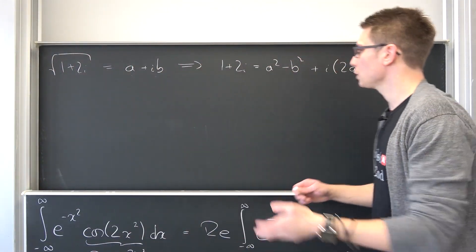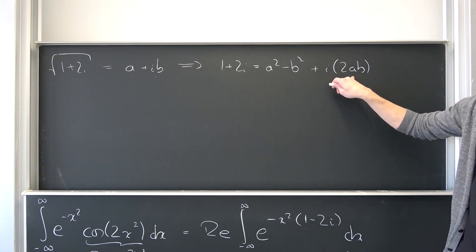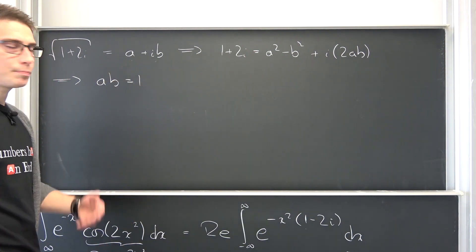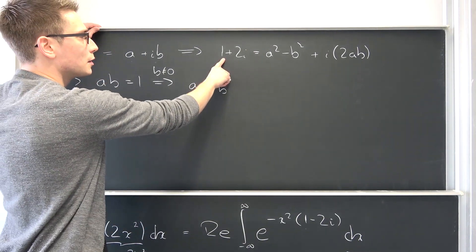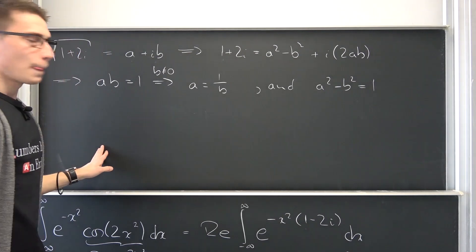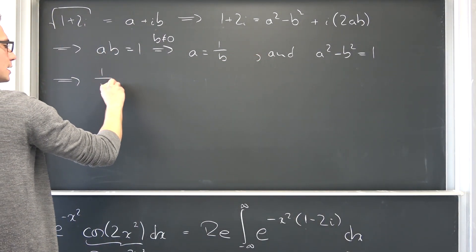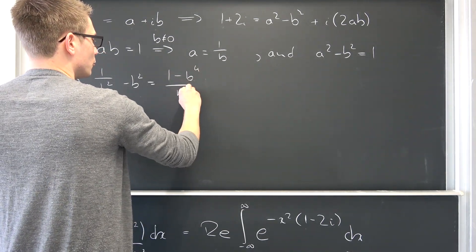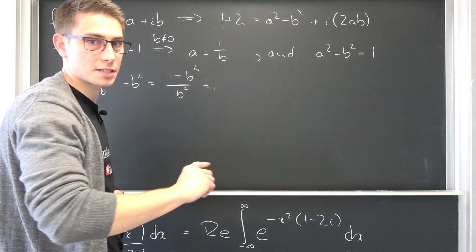If you have ever calculated the square root of a complex number, you know this is a bit messy. We are going through the process because it's part of evaluating this integral. Square root of 1 plus 2i is going to give us a complex number again — we call it a plus ib. The most logical step is to square both sides, giving us 1 plus 2i equals a squared minus b squared plus i times 2ab. Two complex numbers are equal if their real and imaginary parts are equal.